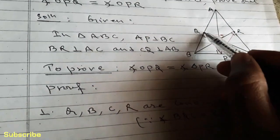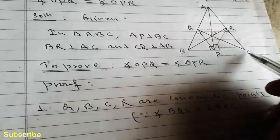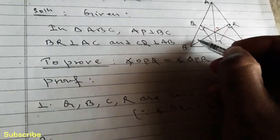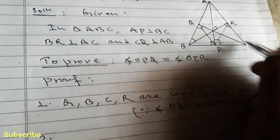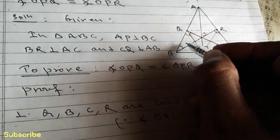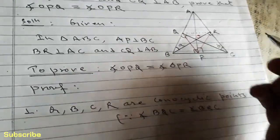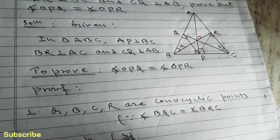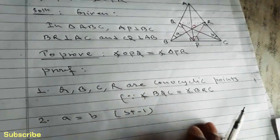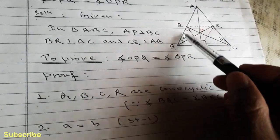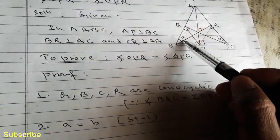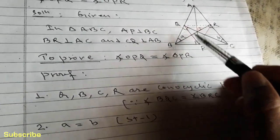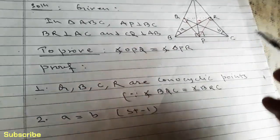Statement number two: since Q, B, C, R are concyclic points, if we join Q and R, then angle QBR is equal to angle QCR. Let's call these angles A and B respectively. The reason is from statement one — since the four points are concyclic, angles QBR and QCR both stand on the same segment QR, so angles in the same segment of a circle are equal.